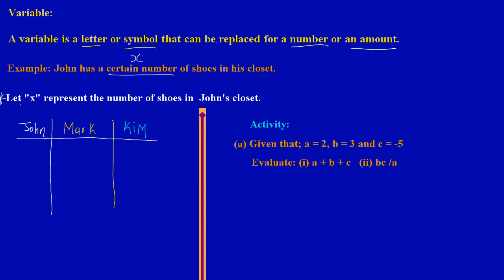We established that the number of shoes John has in his closet is X amount. Now, let's say Mark had twice the amount of shoes that John has — then we could say Mark has 2 times X, written as 2X. Remember, 2X is the same as X plus X. So Mark has 2X amount of shoes. Notice everything is in relation to John.